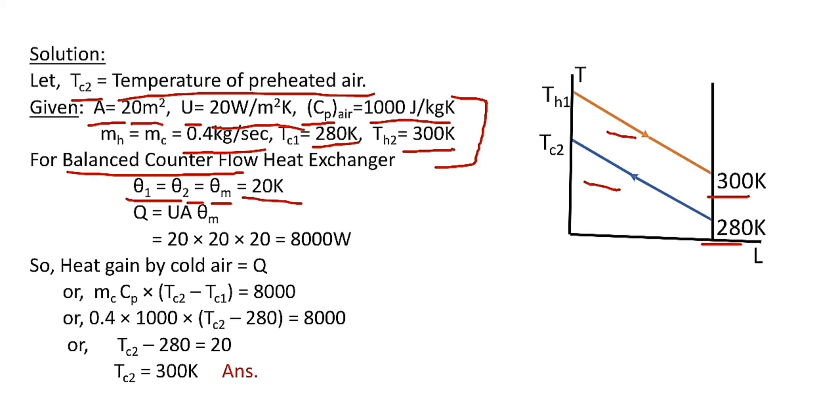Now heat transfer rate for the given heat exchanger Q = U A theta M. The values of U, area, and theta M are known. So Q = 20 × 20 × 20 = 8000 Watt.